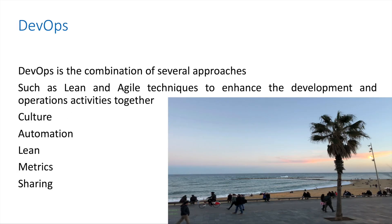Why DevOps needs to be taken into account carefully is because you are impacting culture, bringing automation to your organization, and thinking lean. You are going to face resistance whenever you try to implement a lean methodology. Metrics — everybody lives on metrics and we need to be aware they are going to be important. And sharing knowledge is the last pillar, which is going to face less resistance because in the IT and software industry, we are used to sharing.